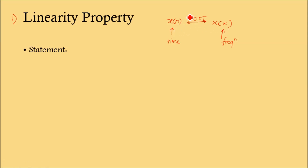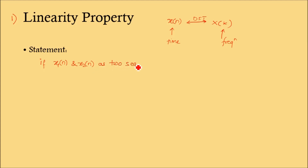They are reverse of each other — from x of n you can calculate the DFT that is x of k, and from x of k you can calculate the inverse DFT that is x of n. Now with the linearity property, suppose x1 of n and x2 of n are two sequences, and the DFT of x1 of n is X1 of k and the DFT of x2 of n is X2 of k.